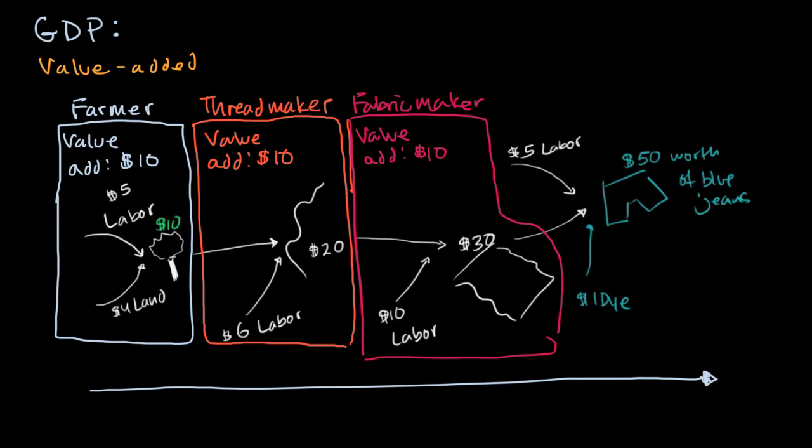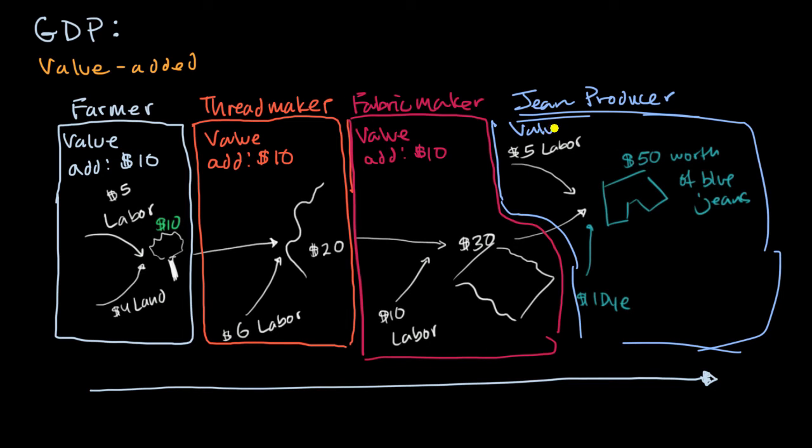And then, last but not least, you have the Jean Company. So the Jean Producer, they take something that has a market value of $30 and they're able to sell it for $50. So their value add, if you take something from $30 and you make it worth $50, then you've added $20 of value.